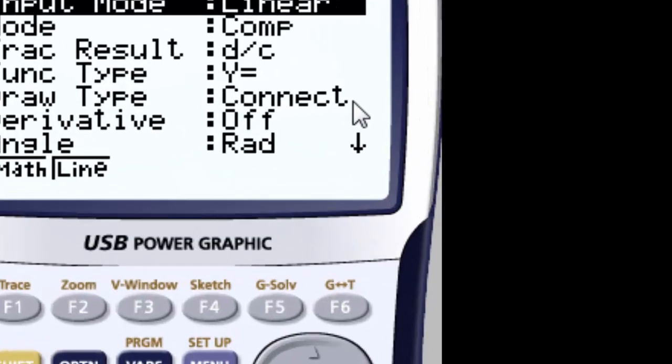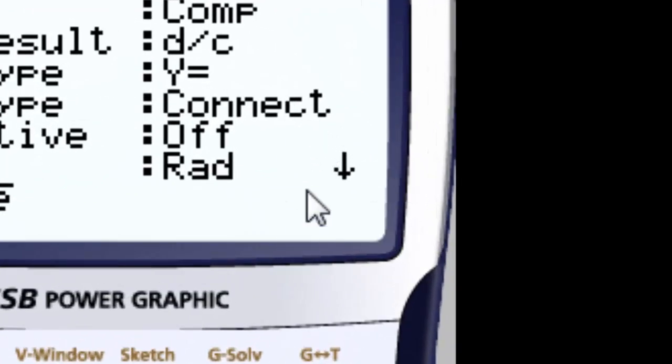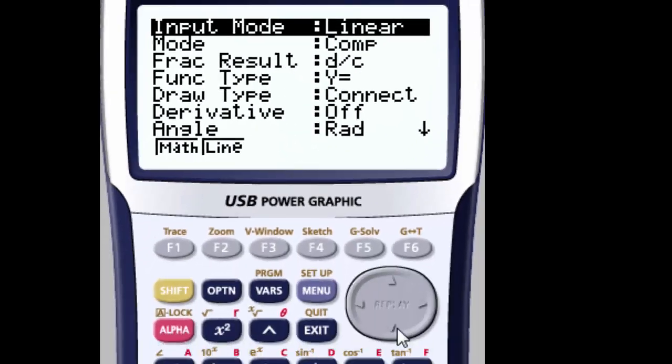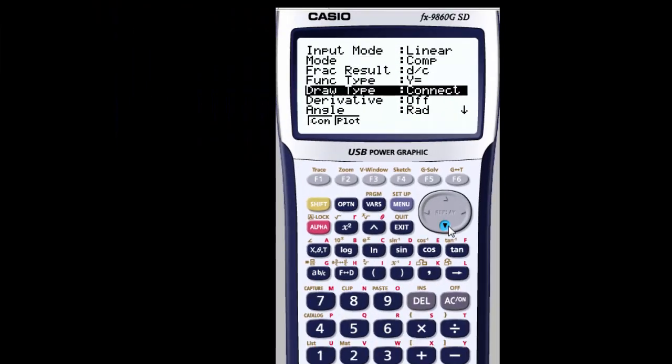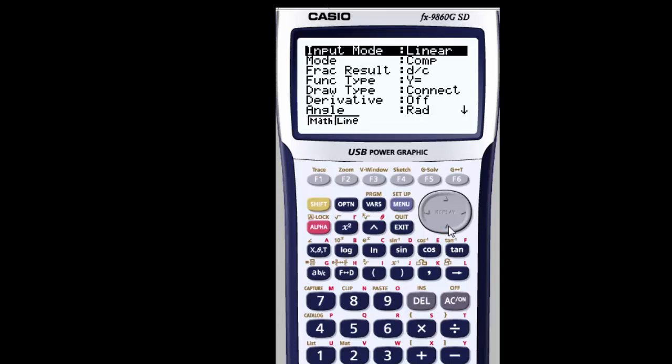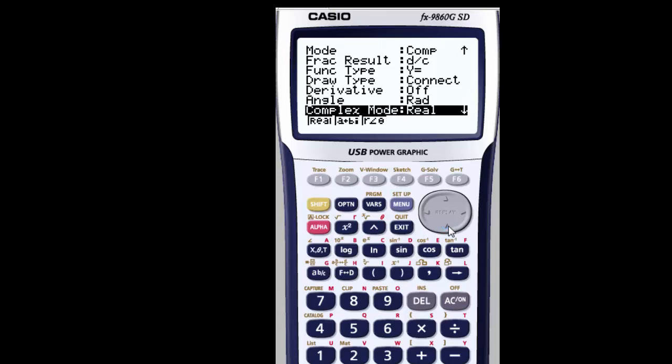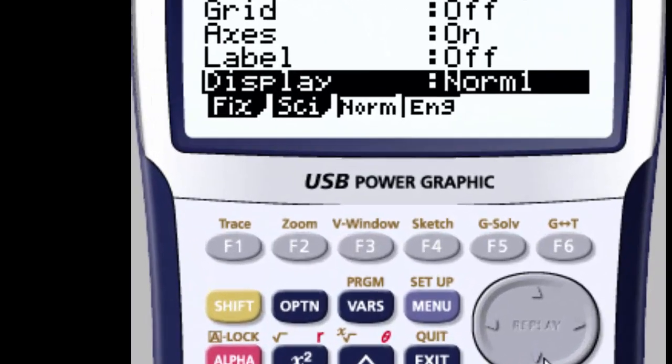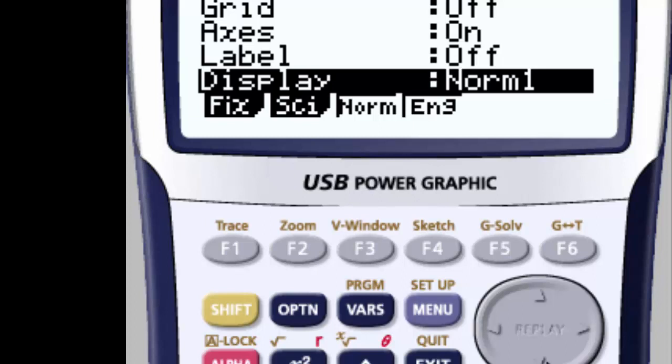And then we're going to take our arrow down. By the way, you see this little arrow right here? That tells you there's more things you can't see. So we're going to arrow down, and we're going to look for display. So as you can see, there's all kinds of information here. So if we go to display, it says normal. Well, I don't want it normal, I want it fixed.